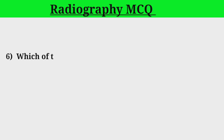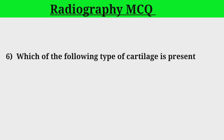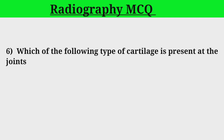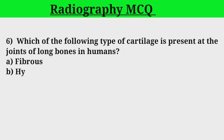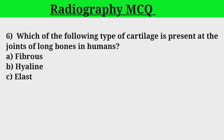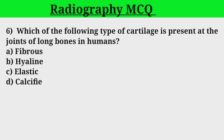Question 6. Which of the following type of cartilage is present at the joints of long bones in humans? A. Fibrous. B. Hyaline. C. Elastic. D. Calcified. Answer: B. Explanation: Hyaline cartilage is present at the joints of long bones.